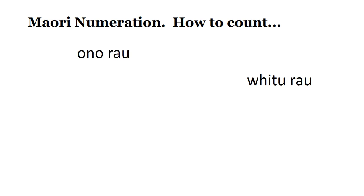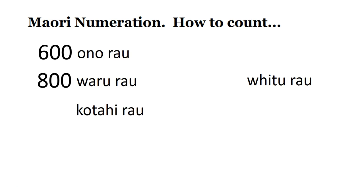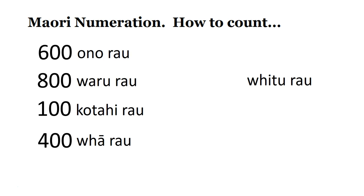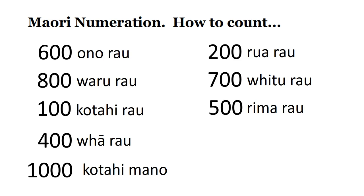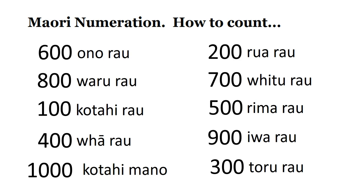Okay, let's try it a different way — from Māori to English. Ono rau — 600. Waru rau — 800. Kotahi rau — 100. Whā rau — 400. Kotahi mano — 1000. Rua rau — 200. Fitu rau — 700. Rima rau — 500. Iwa rau — 900. Toru rau — 300.